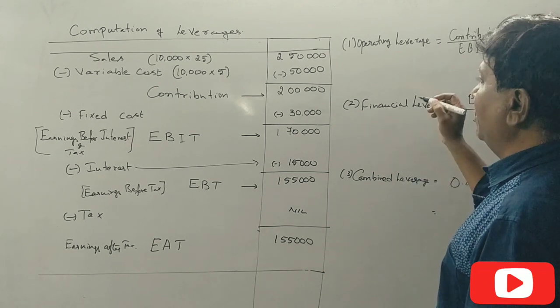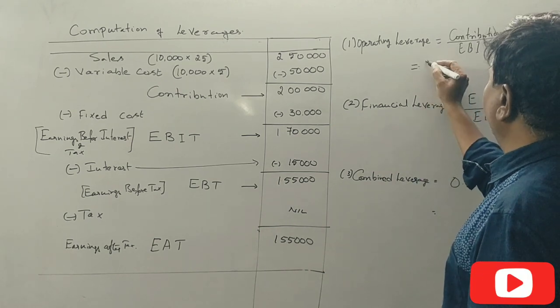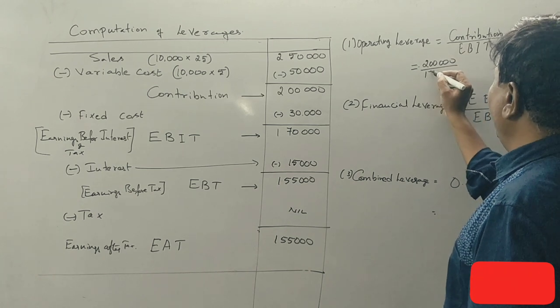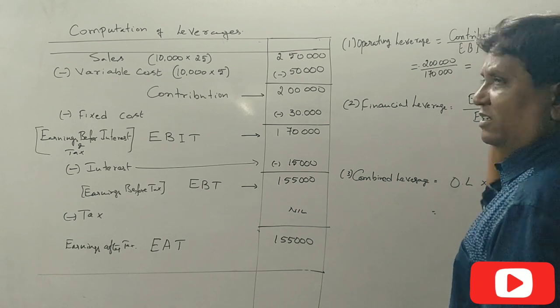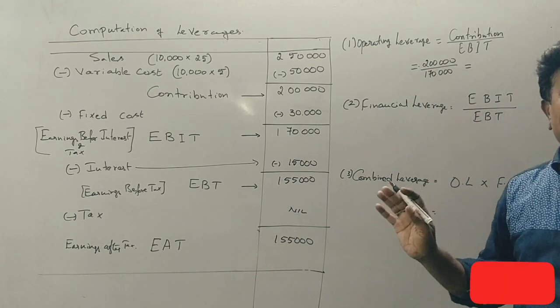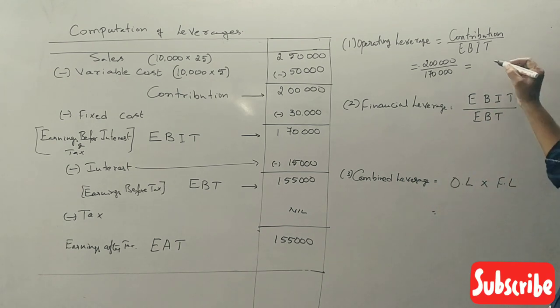Contribution two lakh rupees divided by EBIT one lakh seventy thousand. Two lakh divided by one seventy thousand equals 1.17 times. Operating leverage is 1.17 times.